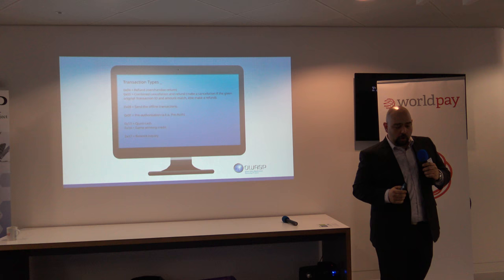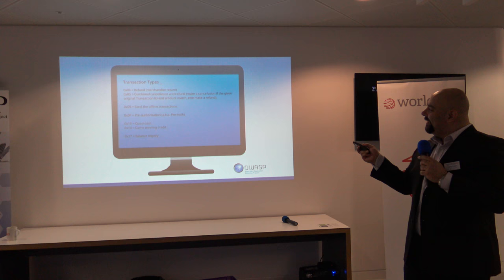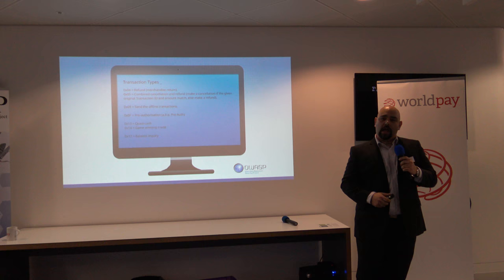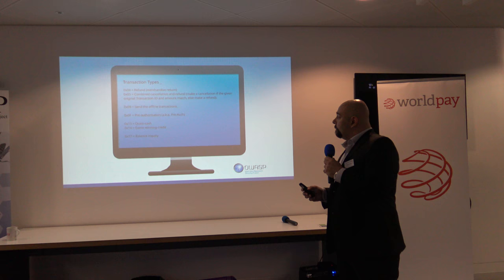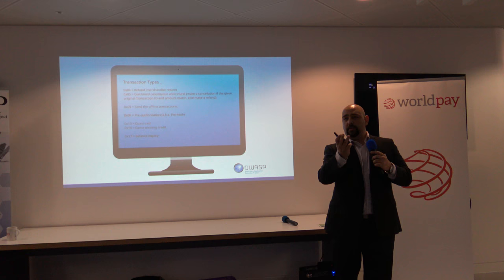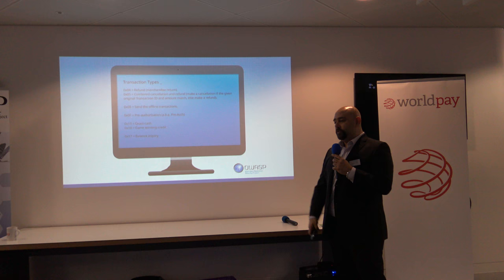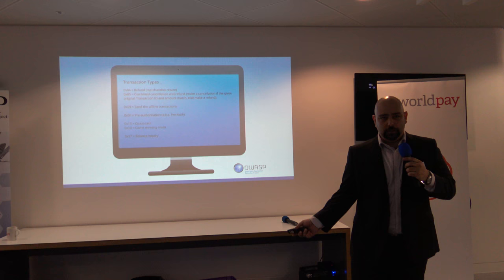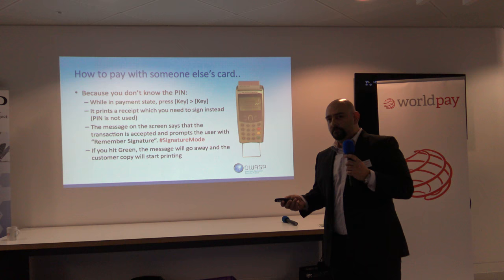Quasi-cash is very interesting — this is when you go to a casino, give them your card and say I want 100 pounds in chips. That's transaction type 13. You go to the roulette, win a million pounds, go back to the cashier, and they perform a type 14 transaction to give you your winnings. If you are the acquirer, how are you going to check if that's true or not? The casino just said so — it's their responsibility.